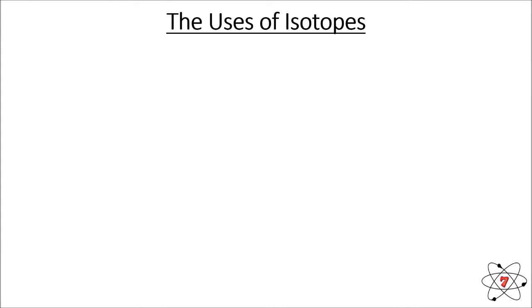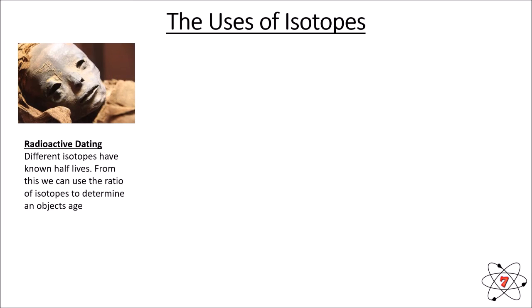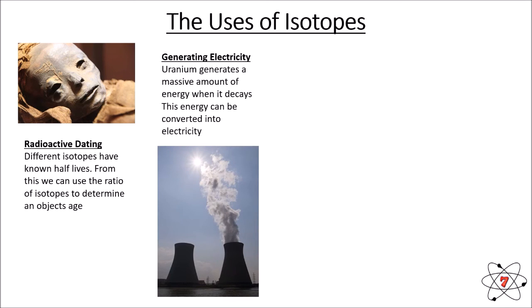Radioisotopes are actually very useful. They can be used for radioactive dating — different isotopes have what we call different half-lives, meaning how quickly they decay by radiation. If we know the half-life, we know how long it takes for an element to decay and can work out how old an object is. We can also use isotopes to generate electricity — uranium generates a massive amount of energy when it decays, and this energy can be converted into electricity.